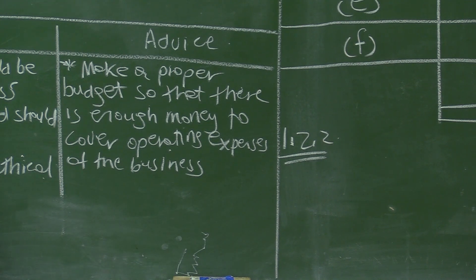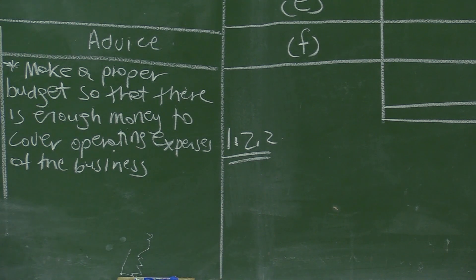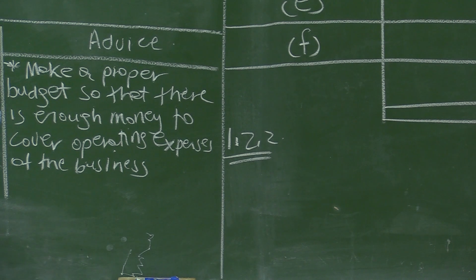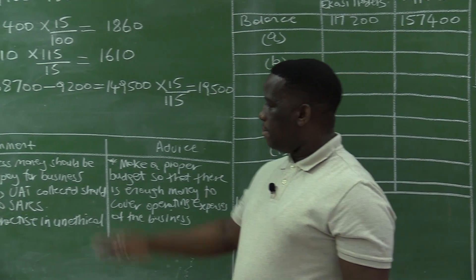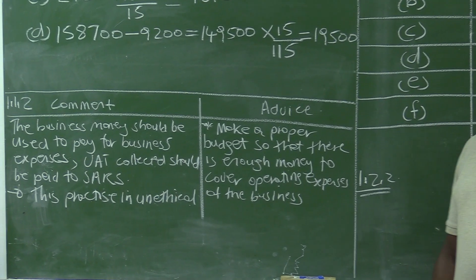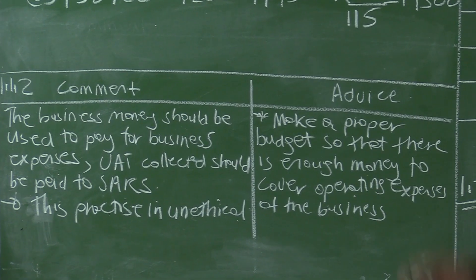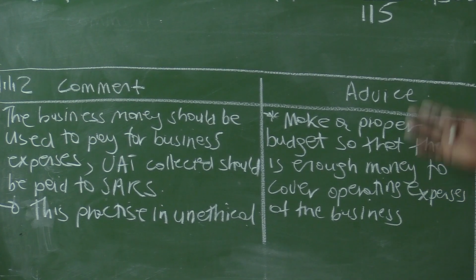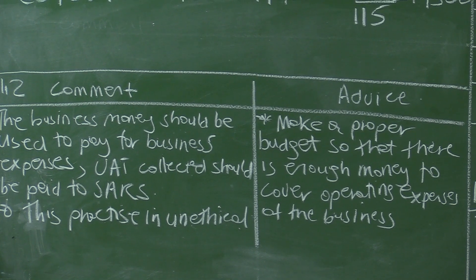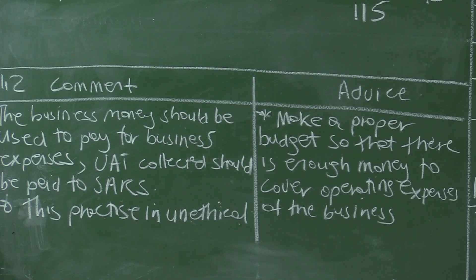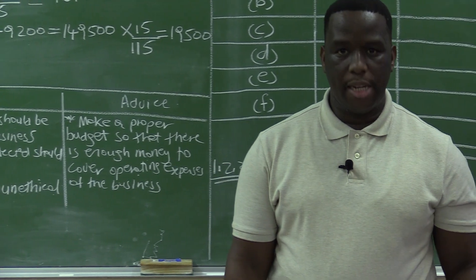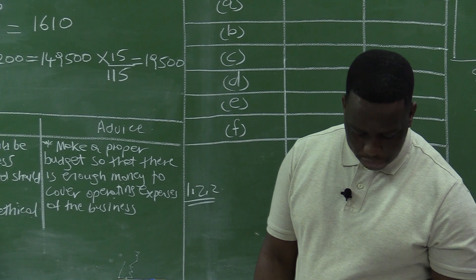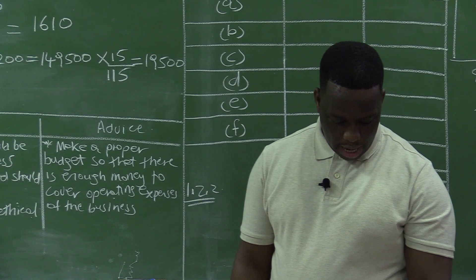Our advice is that the business should create a proper budget so that there is enough money available to cover operating expenses. This way, the business will not resort to using VAT money collected from customers to pay for other expenses. Money collected for VAT should be paid directly to SARS and not used for business expenses. Proper budgeting will prevent this unethical practice. That concludes question 1.1 on VAT, and we now proceed to question 1.2.